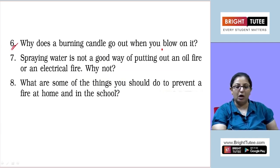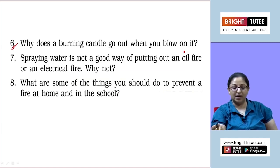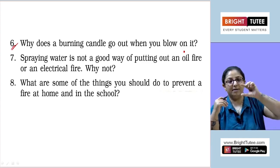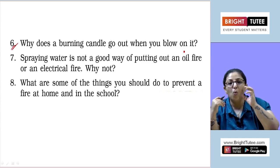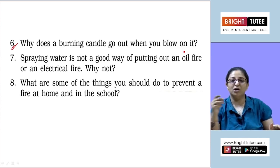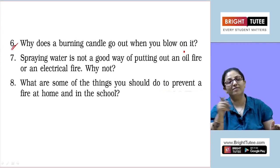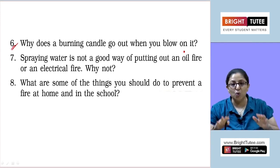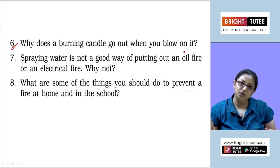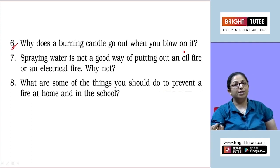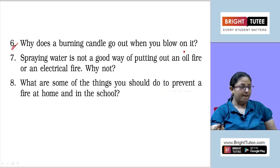Question number six: why does a burning candle go out when you blow on it? When we blow on a burning candle, with our blow the air surrounding the flame cools down — the temperature of that air goes down below the flash point. The answer: when we blow on a burning candle, we remove the hot air around the flame, causing a fall in temperature below the flash point, so the fire goes out.